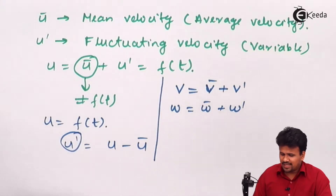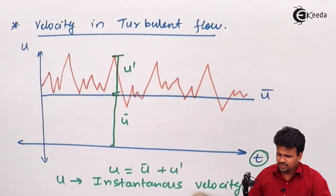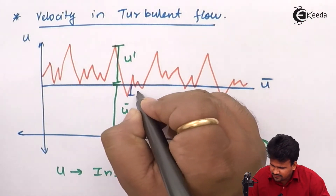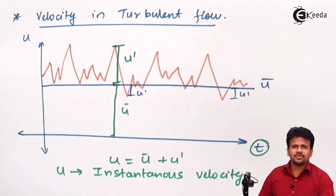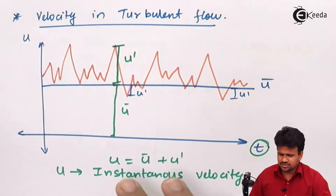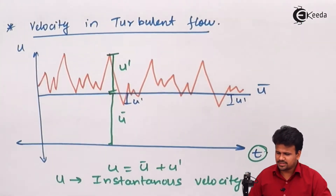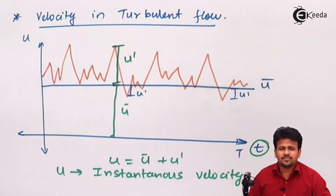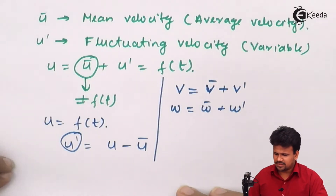The fluctuating velocity can be a positive or negative value depending upon the graph. In some regions the fluctuating velocity will be negative, and the instantaneous velocity changes according to the fluctuating velocity, whereas the mean velocity remains constant. To calculate the total mean velocity we need to integrate, or take the area under the entire graph for a given period of time.